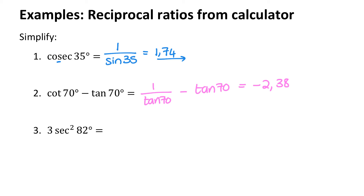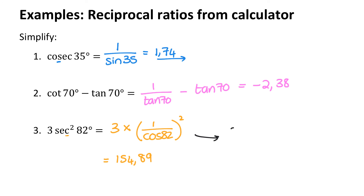Just be careful — if your calculator opens a bracket before you type in the angle, remember to close that bracket. The last example is 3 sec squared of 82. That will be 3 times by 1 over cos of 82, squared. Remember, the 3 is not squared, just the sec is squared. You get 154.89. You could also say 3 divided by cos of 82, all squared, and that would give you exactly the same answer.